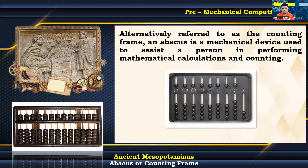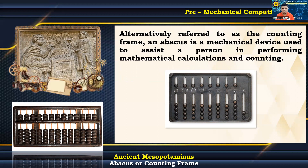Alternatively referred to as the counting frame, an abacus is a mechanical device used to assist a person in performing mathematical calculations and counting. In addition to performing the fundamental mathematical operations of addition, subtraction, multiplication, and division, an abacus can compute roots up to the cubic degree.